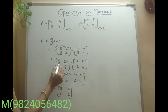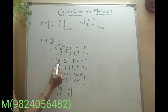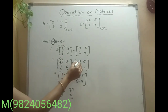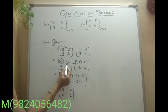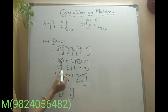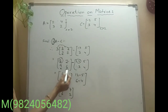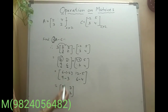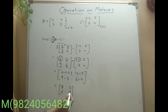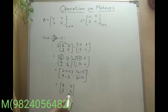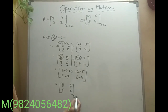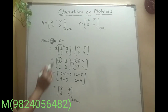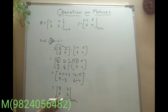As usual, respective elements will be subtracted from respective elements. So 6 minus minus 2, then 12 minus 5, 9 minus 3, and 6 minus 4. So the answer we are getting is 8, 7, 6, 2. The order is 2 by 2. So in addition and subtraction, when we do algebraic operations, the order of the answer remains the same.